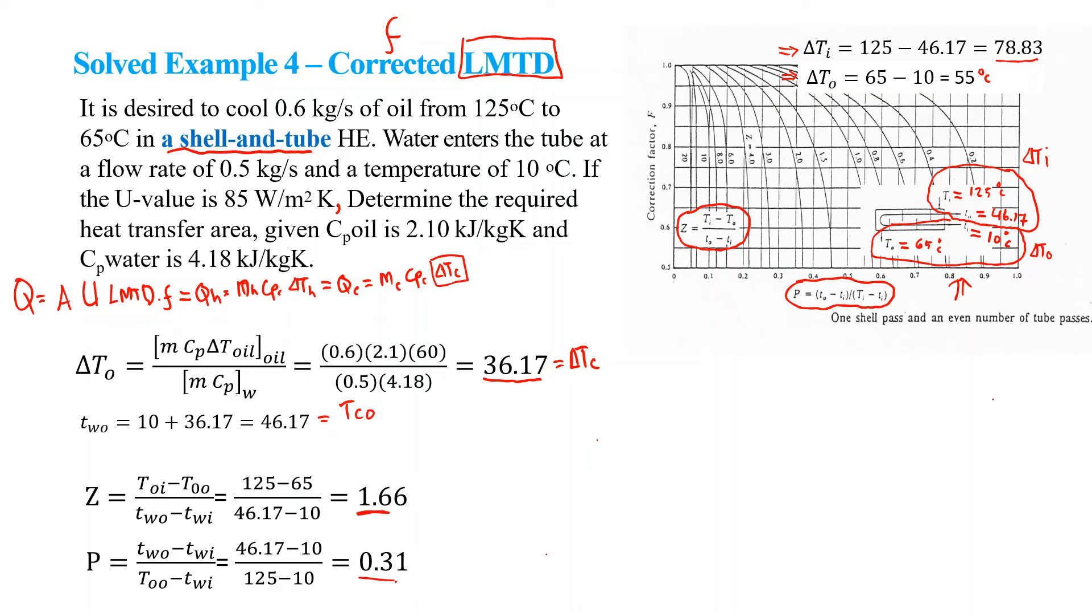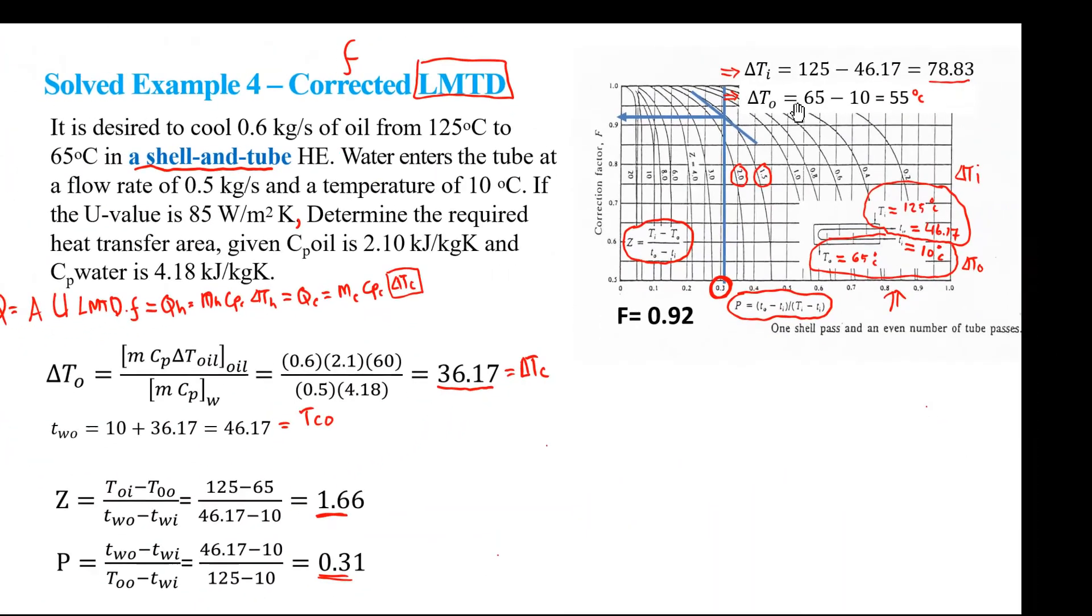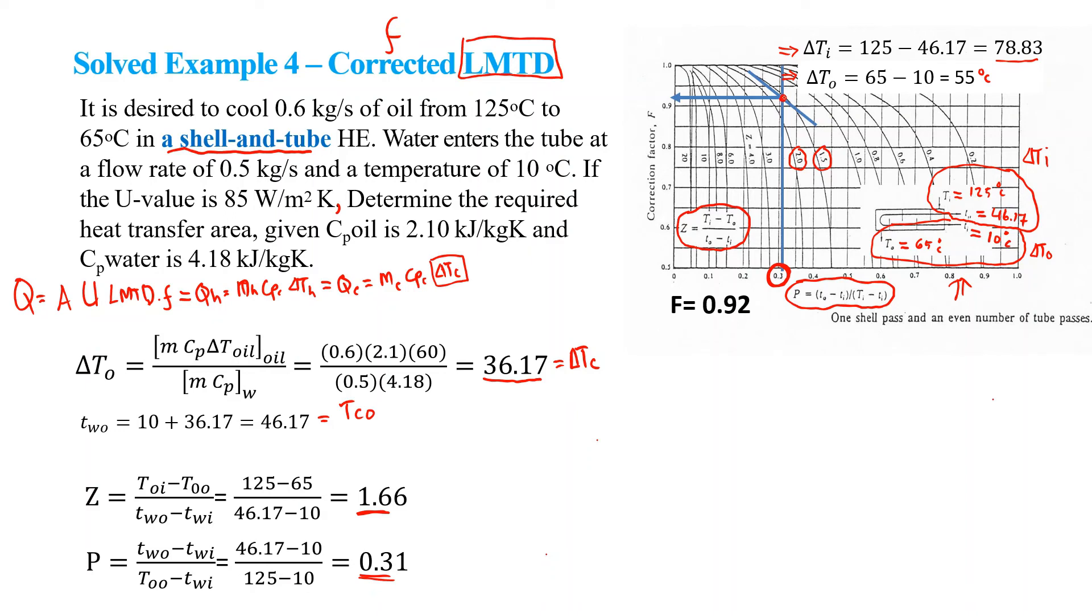We get Z equal to 1.66 and P equal to 0.31. We then try to find out the point where the two values cross. P is about 0.31, and Z is 1.66, which is somewhere between 1.5 and 2.0, very close to 1.5. I identified the point more or less exactly at this point, and you can find out the F value here. The F value I identified as 0.92.